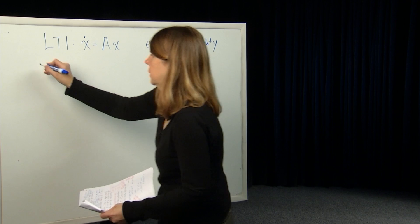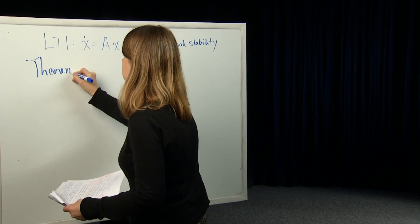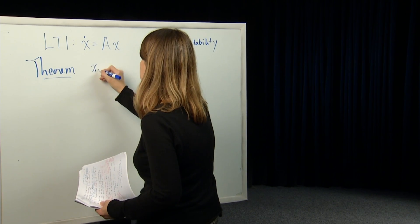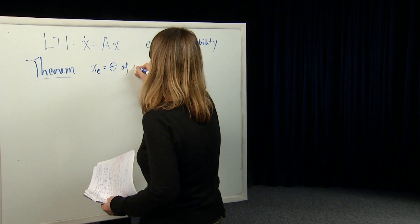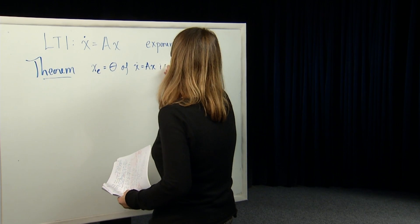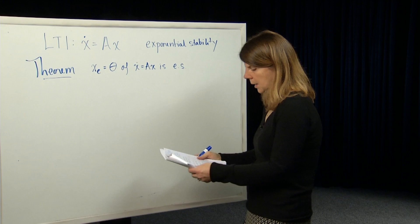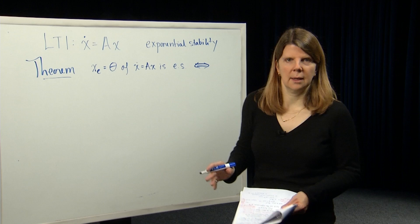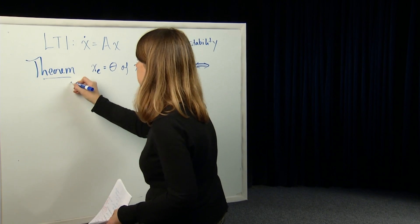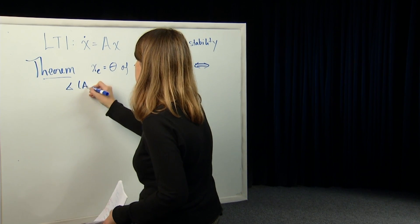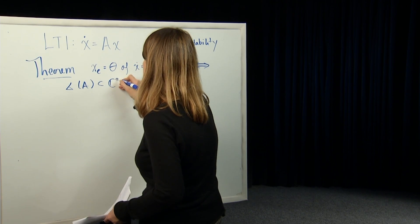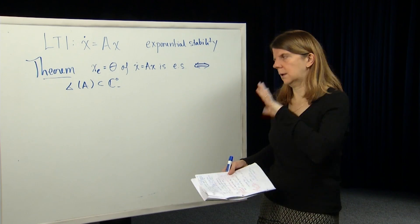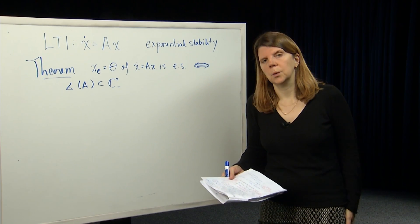The theorem we're going to prove is the following: exponential stability of x-dot equals Ax. The equilibrium at zero of that system is exponentially stable if and only if all of the eigenvalues of the matrix A are in the open left half plane — that is, the spectrum of A is contained in the open left half plane, meaning all eigenvalues have negative real parts and are not allowed to be on the j-omega axis.